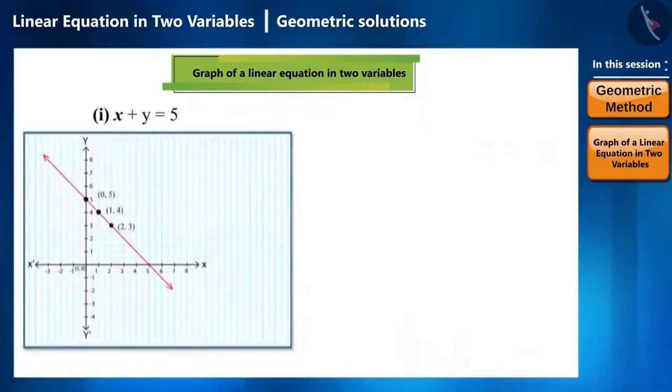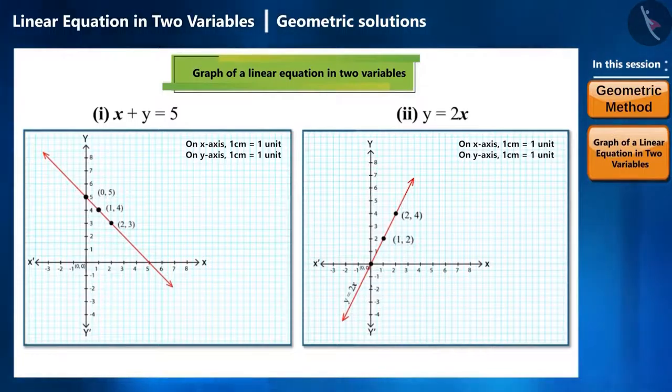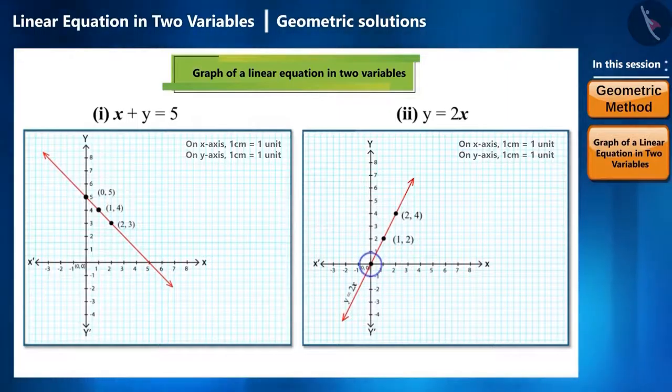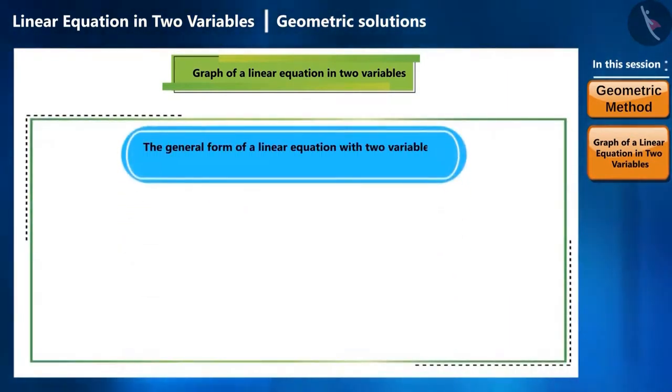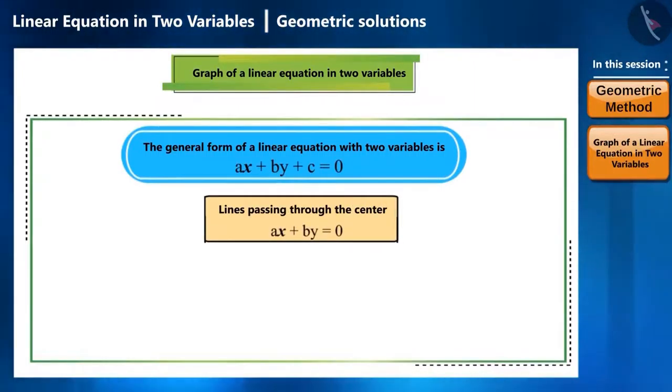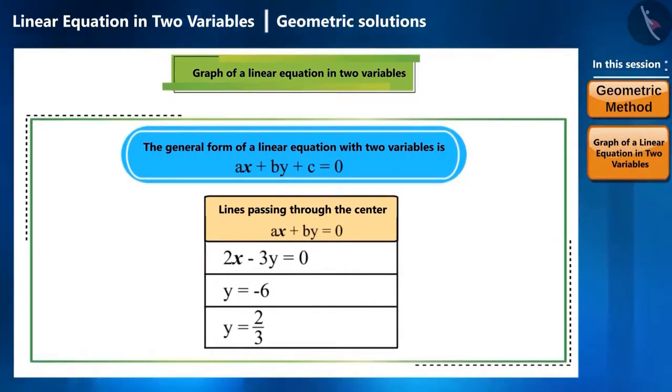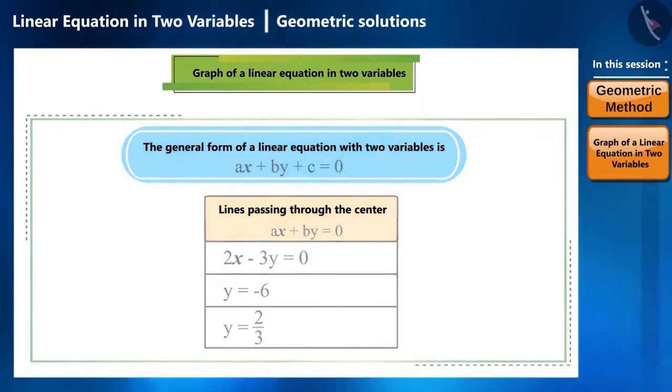Now when we compare these two graphs that we have made, we can see two types of lines. One of them does not pass through the center, whereas the other one passes through the center. The general form of a linear equation with two variables is ax plus by plus c is equal to 0. In this general form, if c is equal to 0, then the line will pass through the center. That is, it will be the normal form of a line passing through the center. You can make a graph for these equations and check whether these lines pass through the center or not.